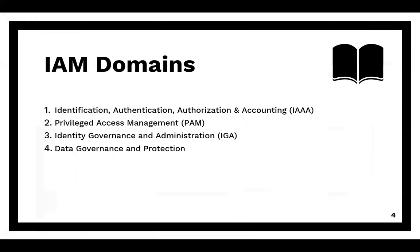There are four main domains that we will be covering in this course. Domain number one is identification, authentication, authorization, and accounting, or IAAA. Domain number two is privileged access management, or PAM. Domain number three is identity governance and administration, or IGA. And domain number four is data governance and protection.